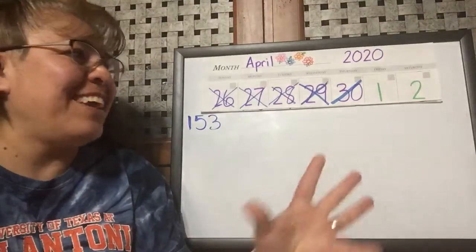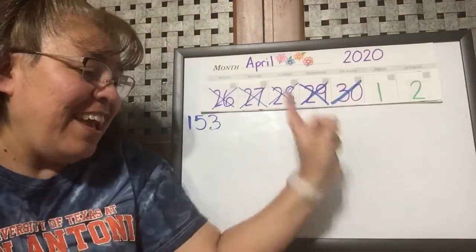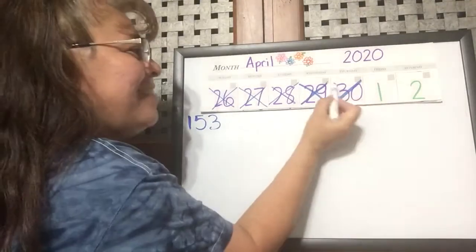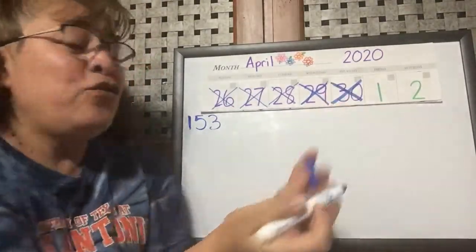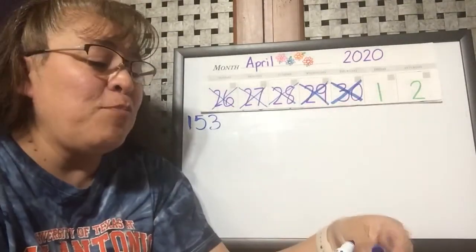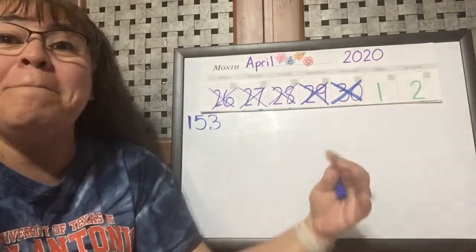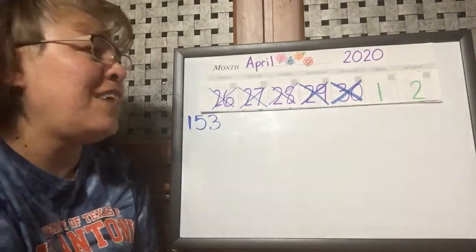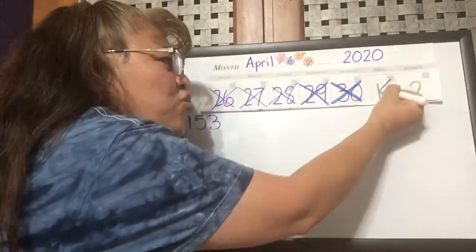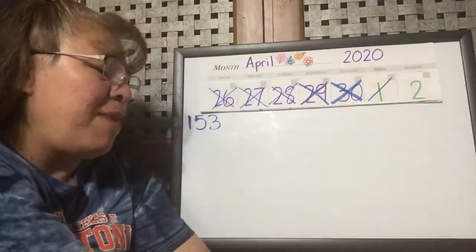All right, so let's see. Yesterday was Thursday, the last day of April, right? Yes, the last day of April. So if yesterday was the last day of April, then today is the first day of May. Today is the first day of May, and today is just starting — the first day of May.